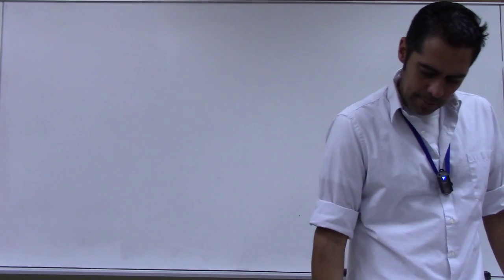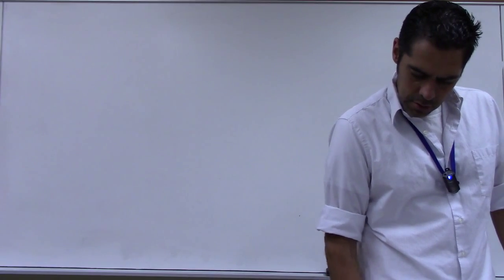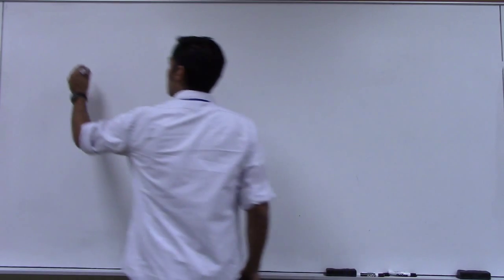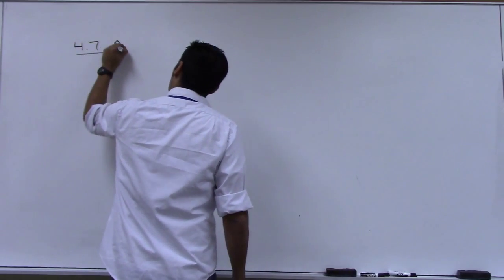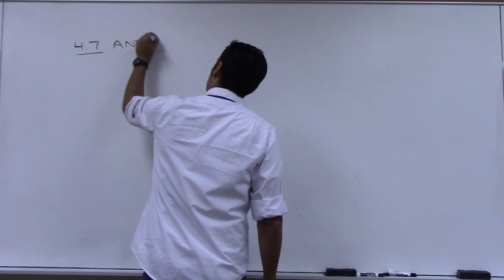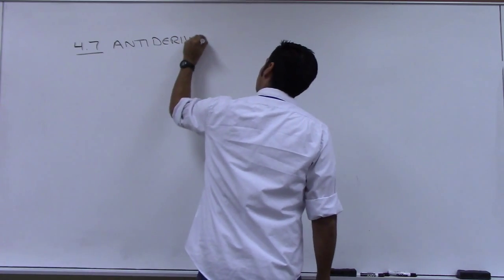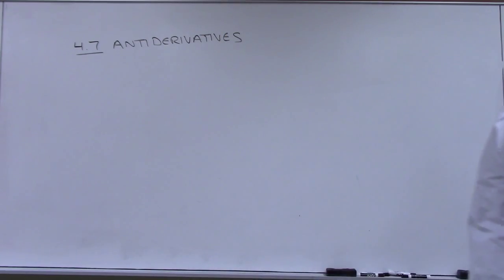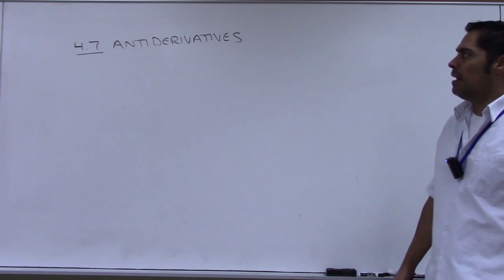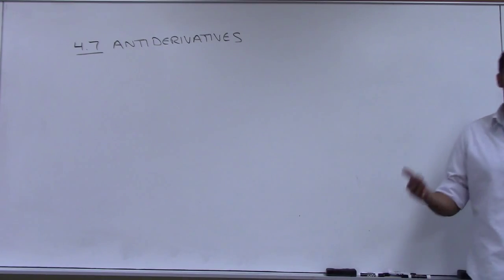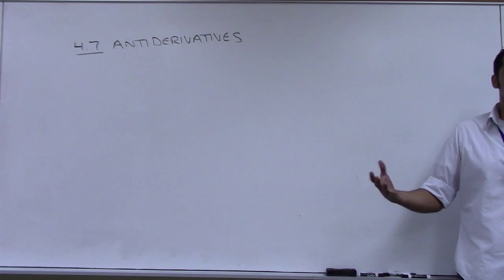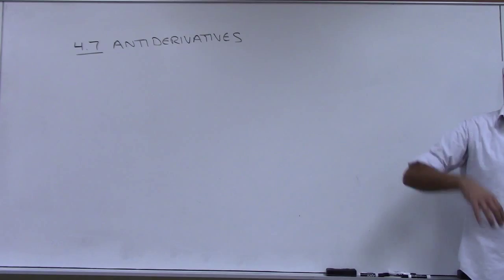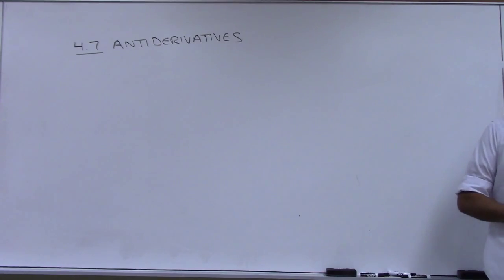I'm going to be talking about section 4-7, anti-derivatives. We talked about this last time — an anti-derivative was the reverse process for taking a derivative, starting with something and going back to where it came from. So we have a more formal way of writing this down.